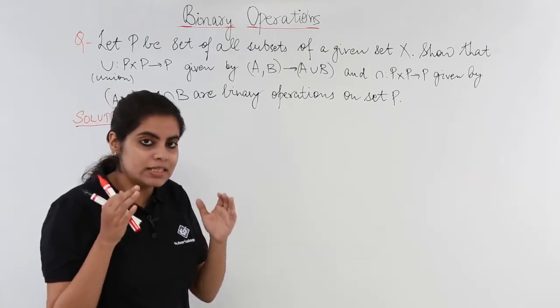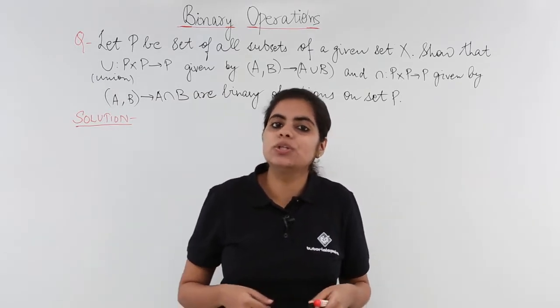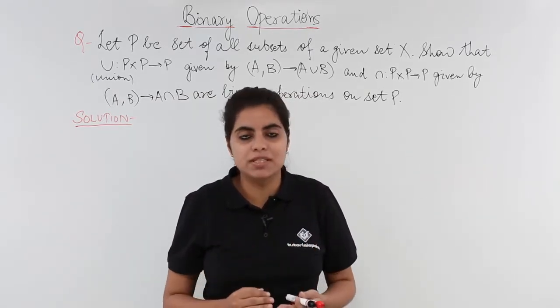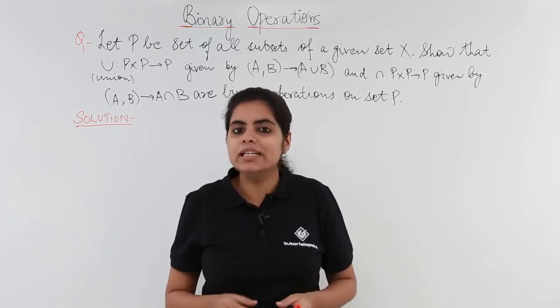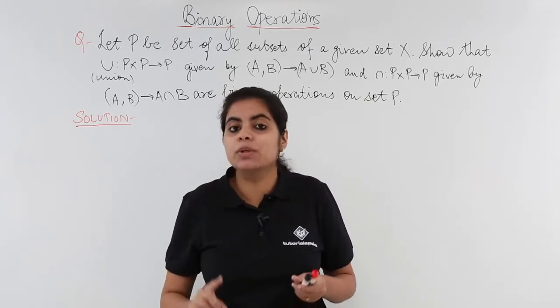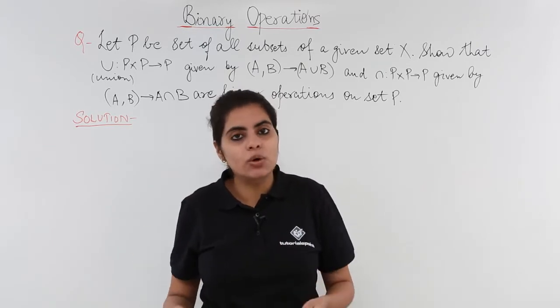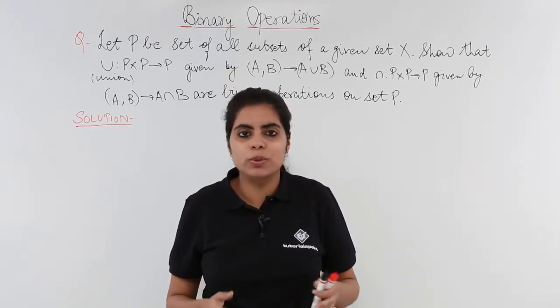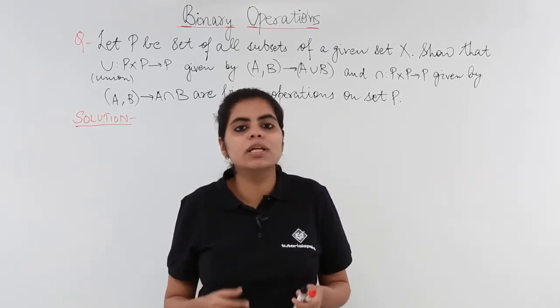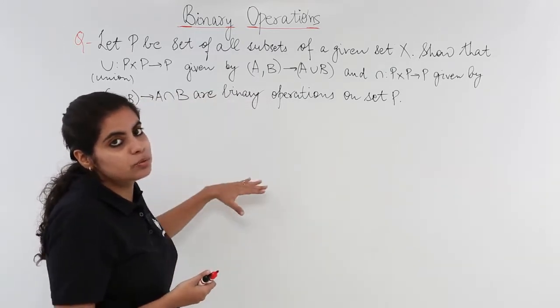Let's get started by understanding what union and intersection operations are. A union operation will take into account all the elements of the two sets, while the intersection operation will take up only the common element, but still it will associate each element to something, so it is a binary operation. There is no mathematical solution to it but only some logic involved. Let's write the logic and only that logic writing will give you marks.